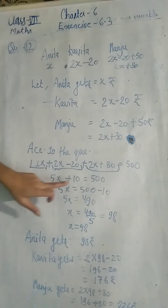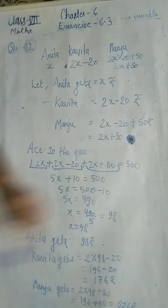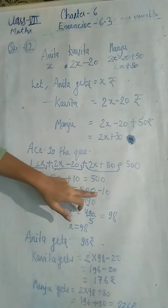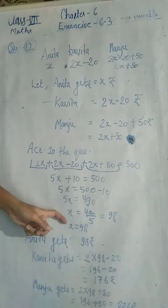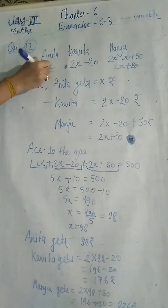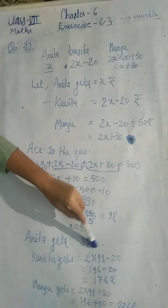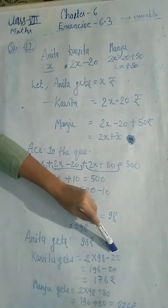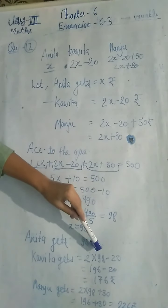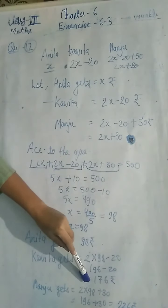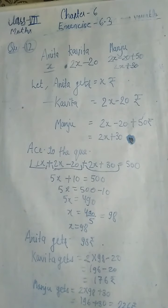x + 2x + 2x = 5x. Constants: -20 + 50 = +30. Wait — minus 20 plus 30? Actually: 5x + 10 = 500. Shift 10 from left to right — minus 10 aa jaayega. 5x = 490. x = 490 ÷ 5 = 98. Anita ko milega x = 98 rupees. Kavita ko milega: 2×98 - 20 = 196 - 20 = 176 rupees. Manju ko milega: 2×98 + 30 = 226 rupees. So this is question number 12.